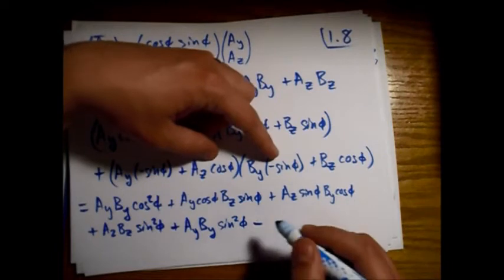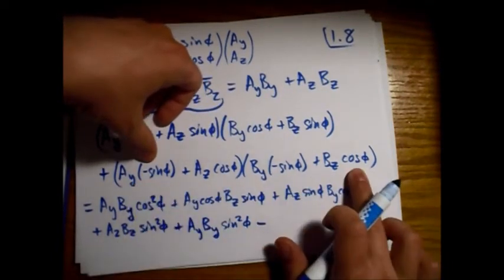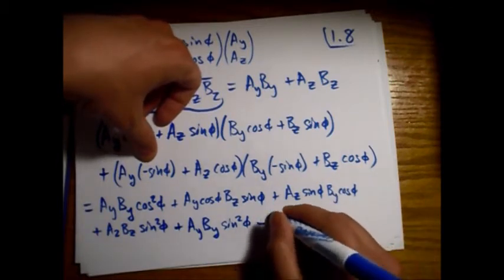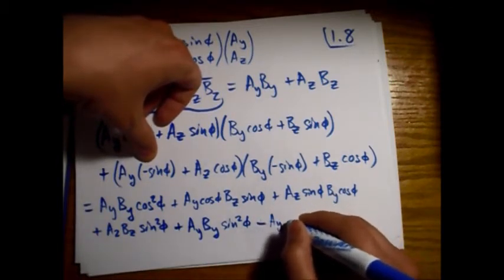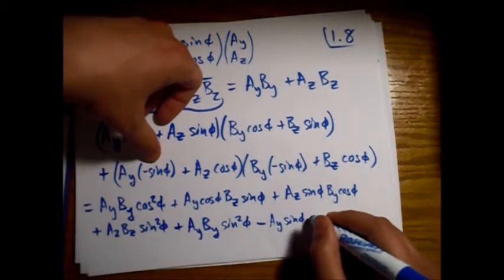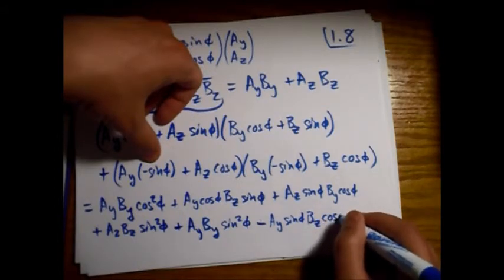Alright, this time we have, so now I'll take, say, this one times this one. So A_y, so we have this minus sign here. So sine φ, B_z, cosine φ.